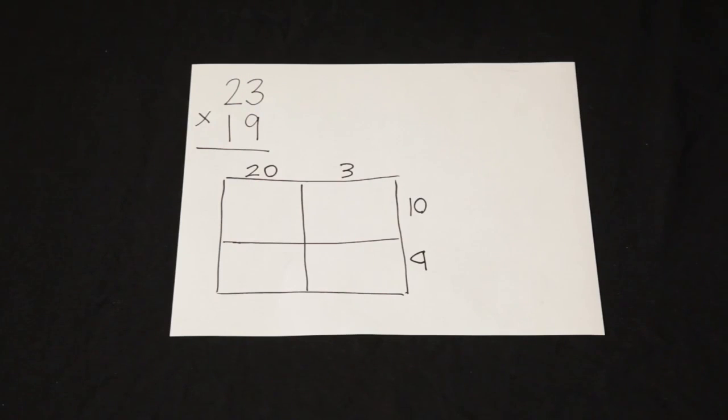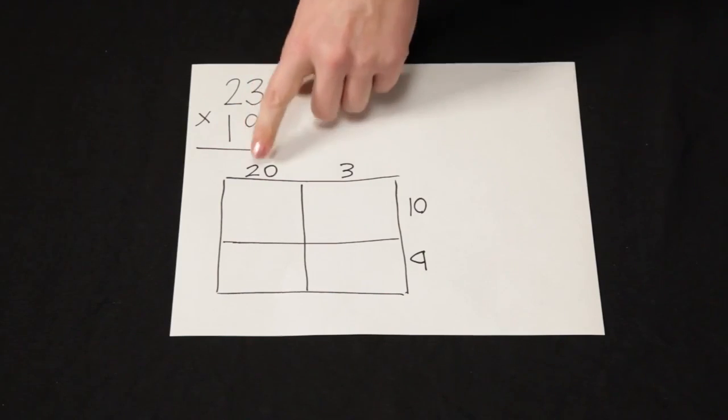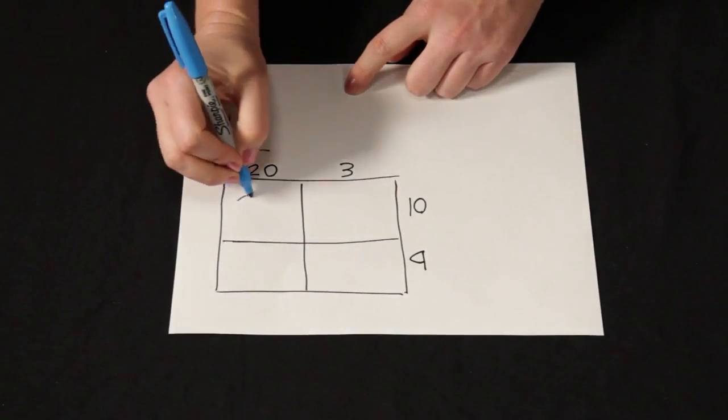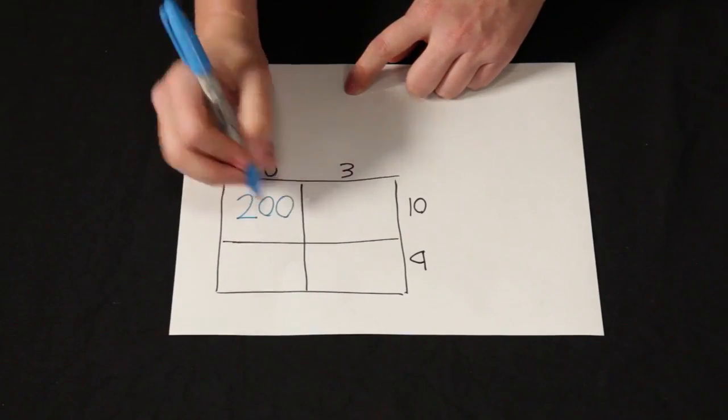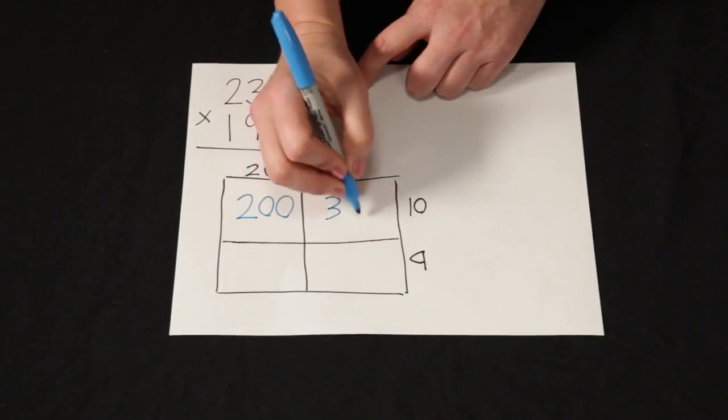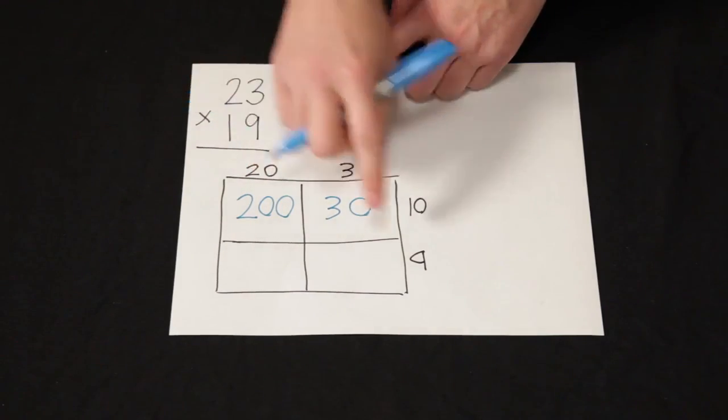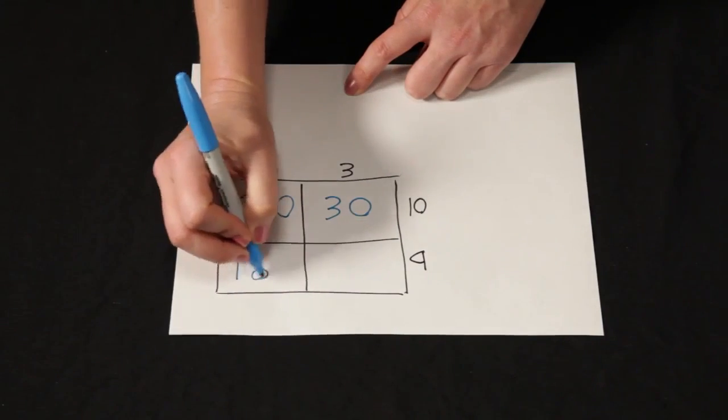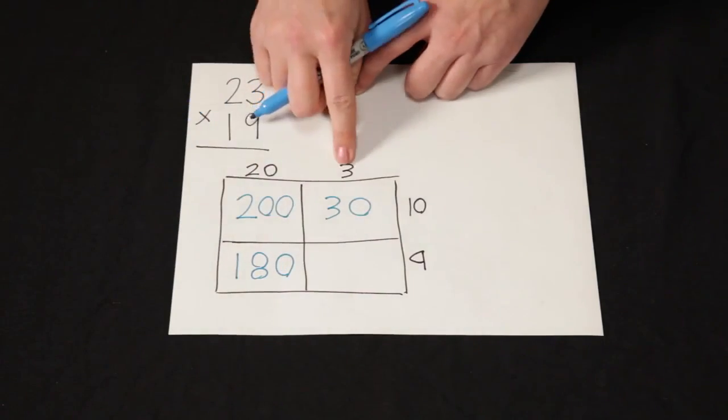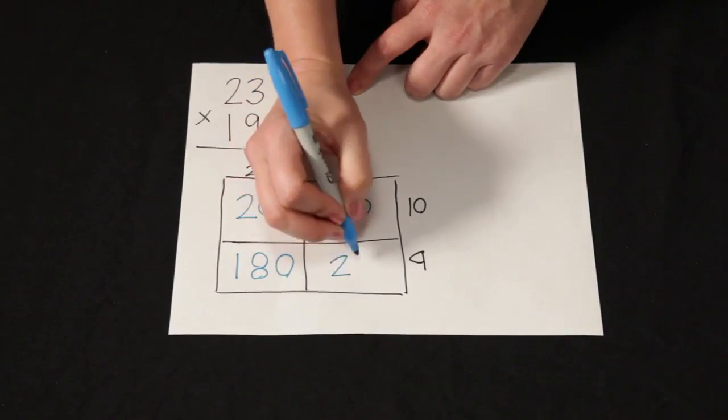Now it's time to do some multiplication. 20 times 10 is 200. 3 times 10 is 30. 20 times 9 is 180, and 3 times 9 is 27.